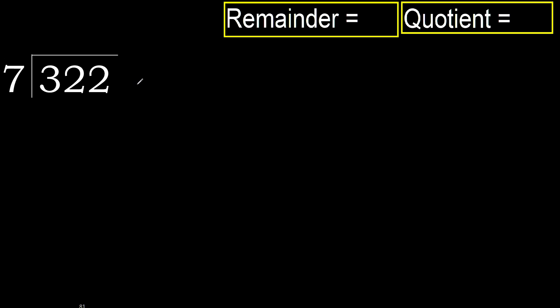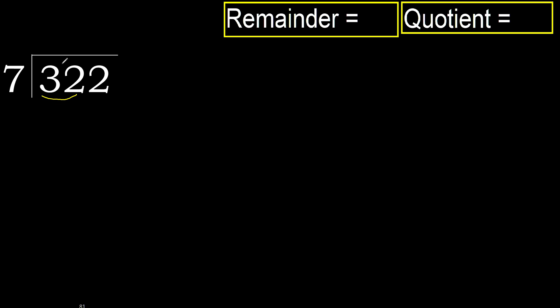322 divided by 7. 3 is less, therefore next. 32 is not less, therefore we work with 32.